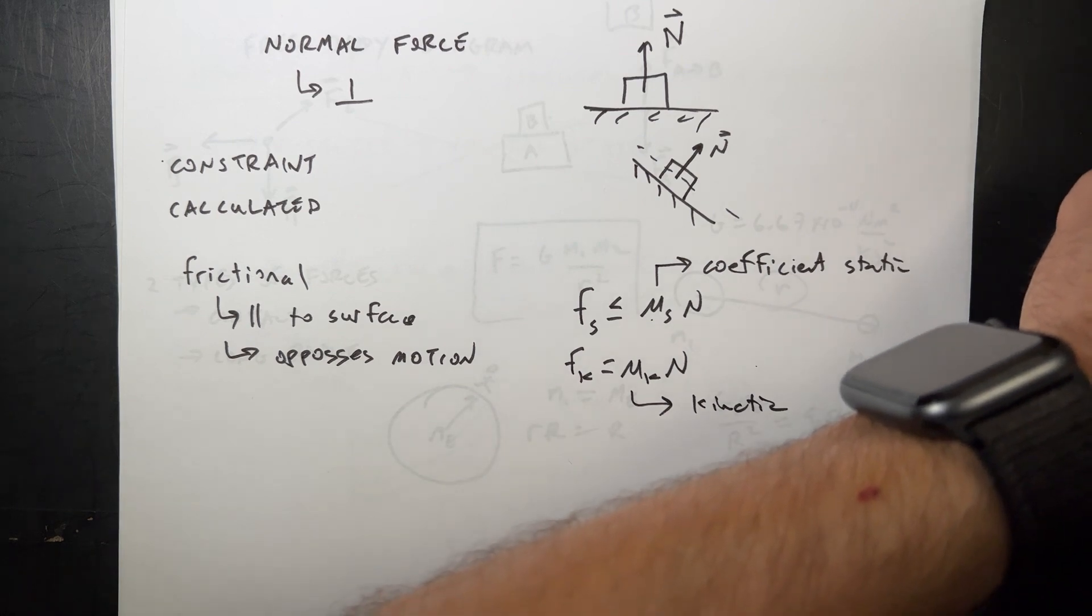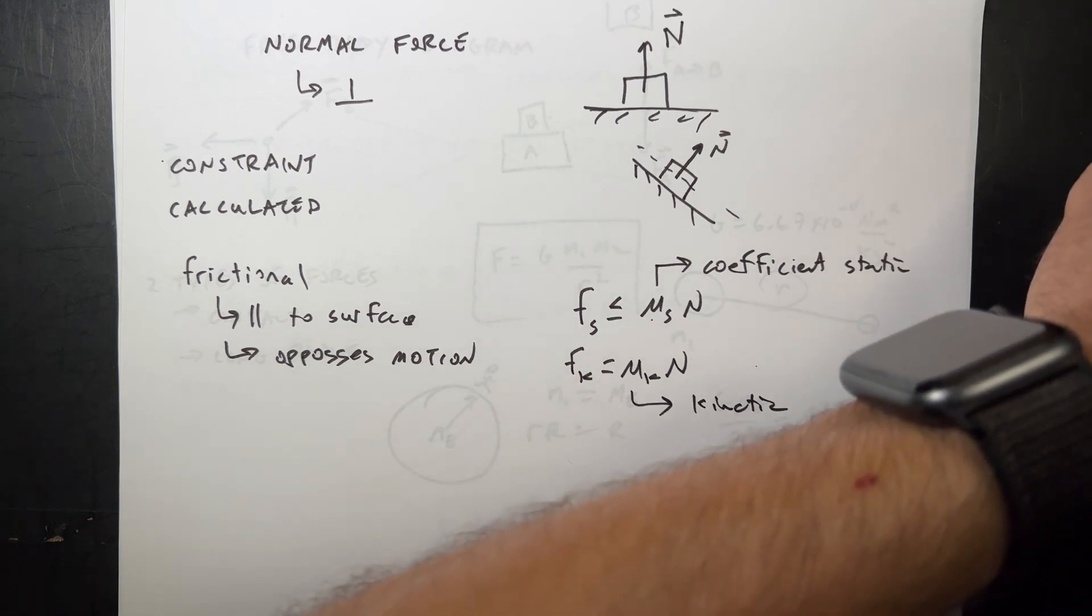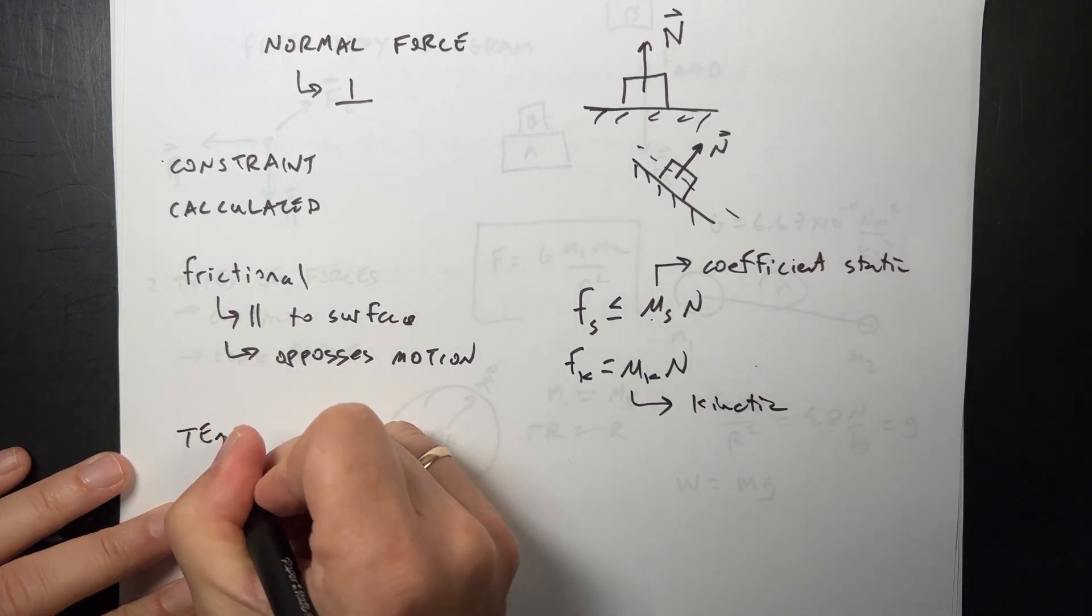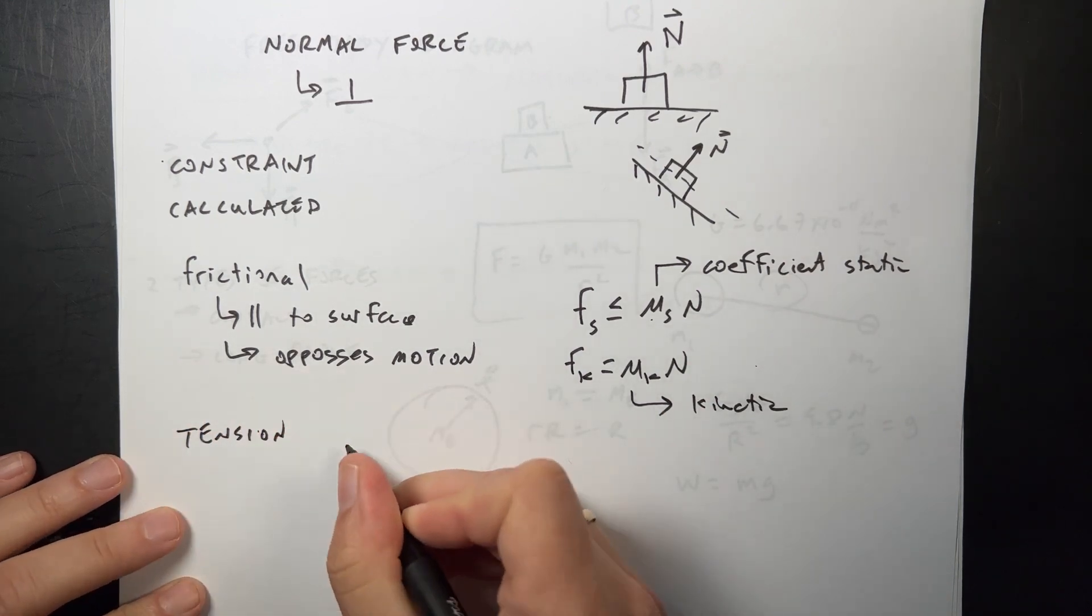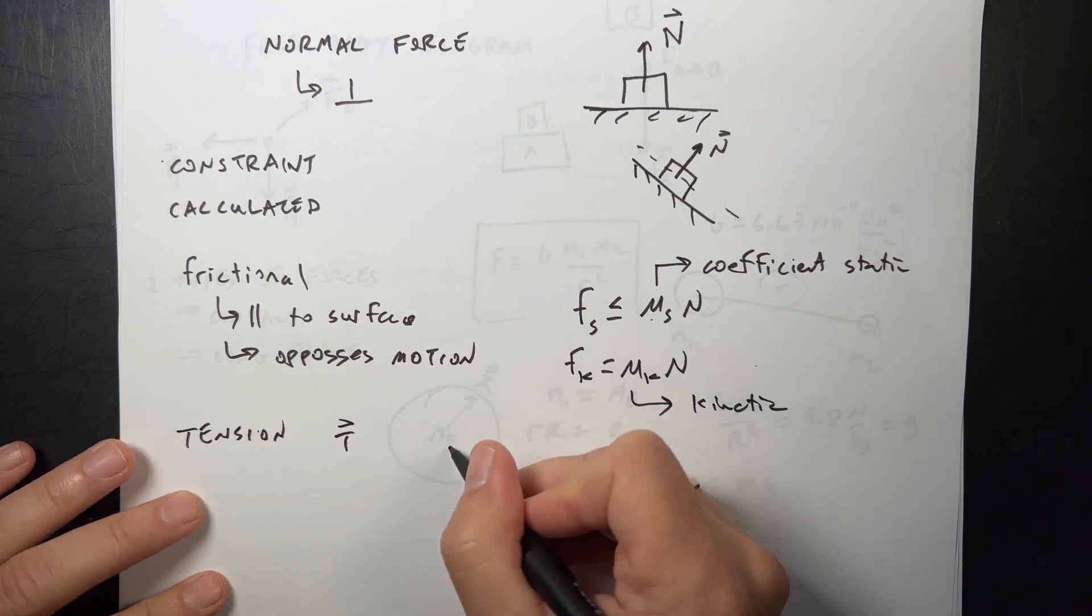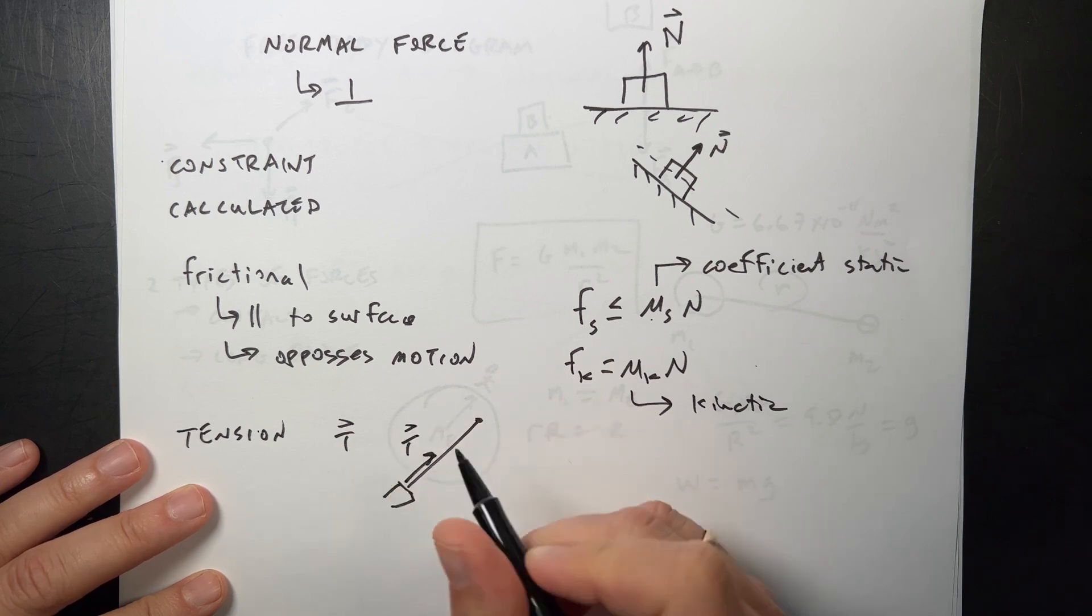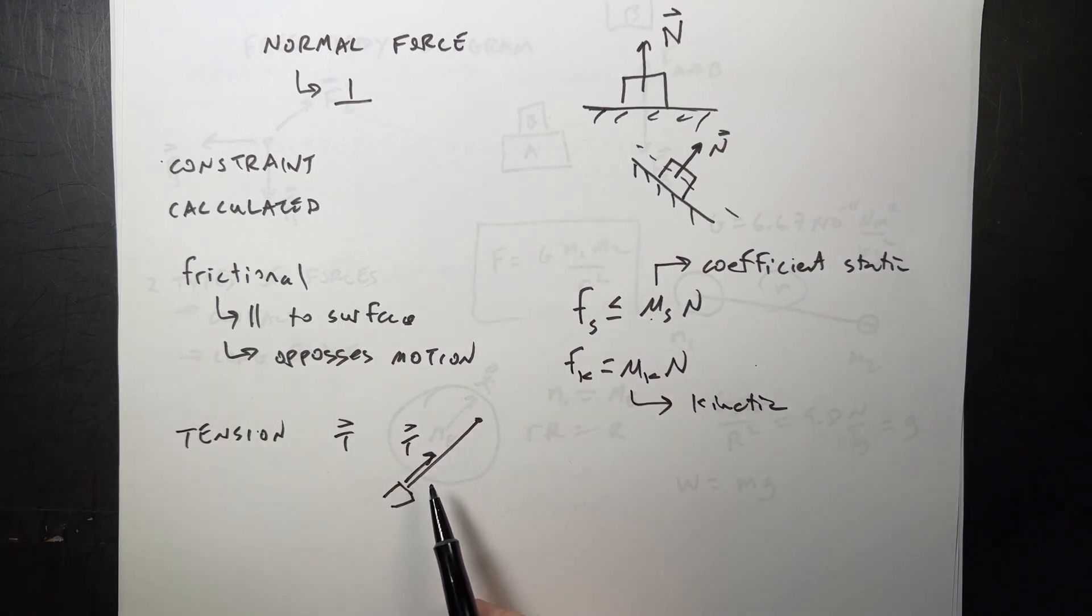Tension. We use T for this. If you have something like this, here's something swinging, I can have a tension T. The one nice thing about tensions is that they always pull, and they always pull in the direction of the rope. We're going to deal with massless ropes just to make things easier.